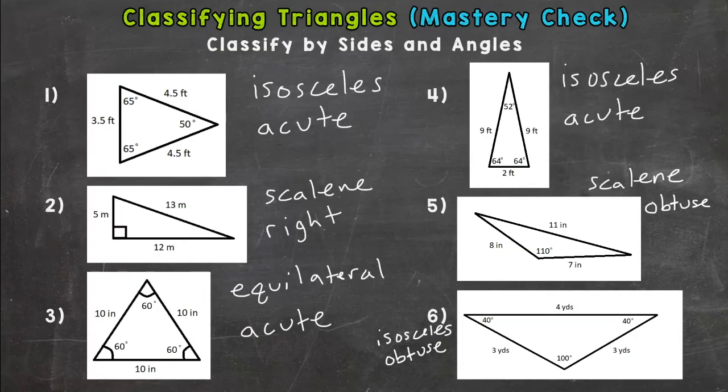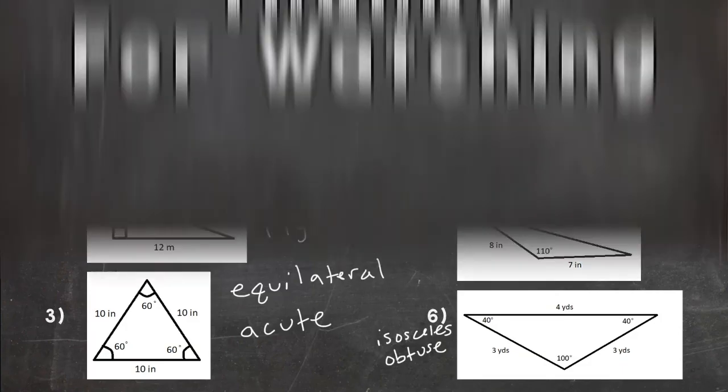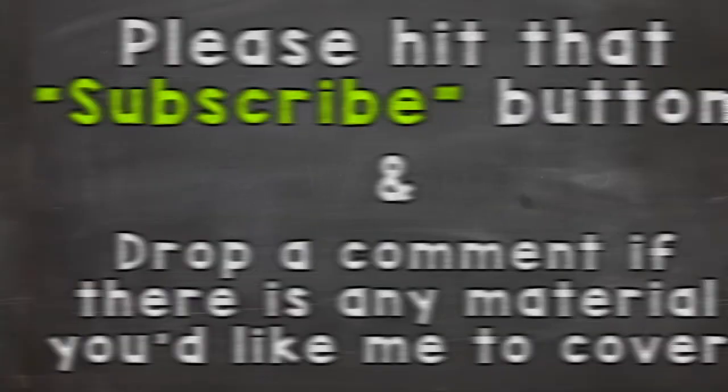All right. There you have it. There are the six classifying triangle examples for your mastery check, classifying by both sides and angles. Hopefully everything went well there for you. If you need a little more help or instruction, like I said, the instructional video link is down in the description. Thanks a lot for watching. And until next time, peace.